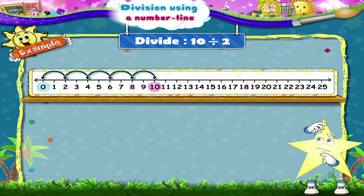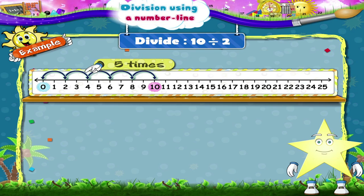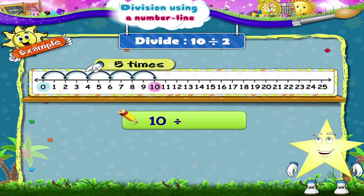How many times did you jump Starry? Ok, 5 times. So, 10 divided by 2 is equal to 5.